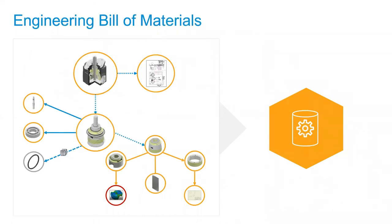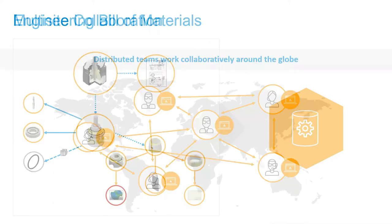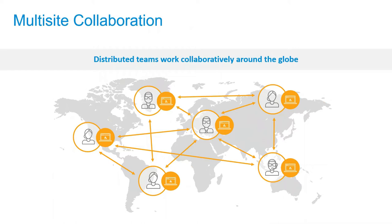Everything you put inside Vault becomes a recipe for your product: your drawings, designs, CAD data, PDFs, Excels, spreadsheets — all of it becomes your engineering bill of materials, and Vault manages that. Everything is kept in a single centralized location. Vault is scalable for any size team and enables multi-site collaboration, allowing people to work as if they're in the same location, enabling 24/7 engineering productivity. Vault utilizes Microsoft SQL replication to do this.